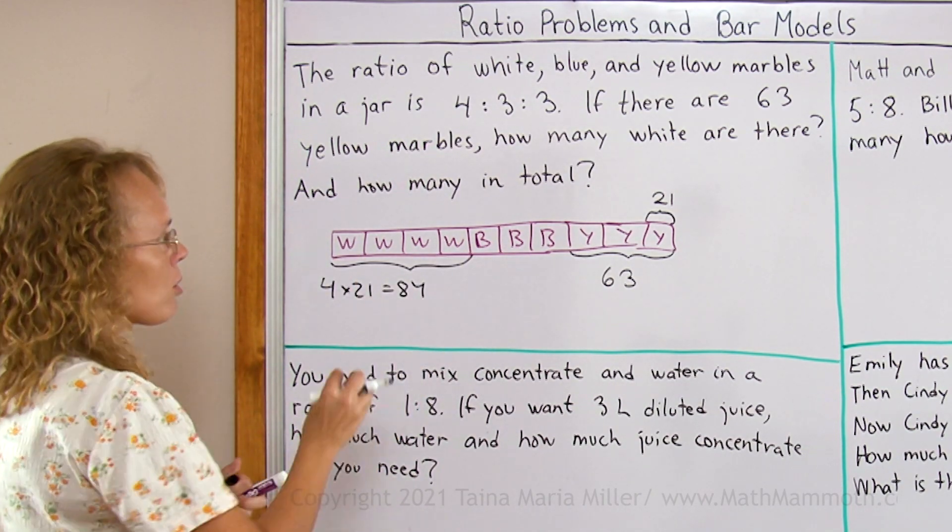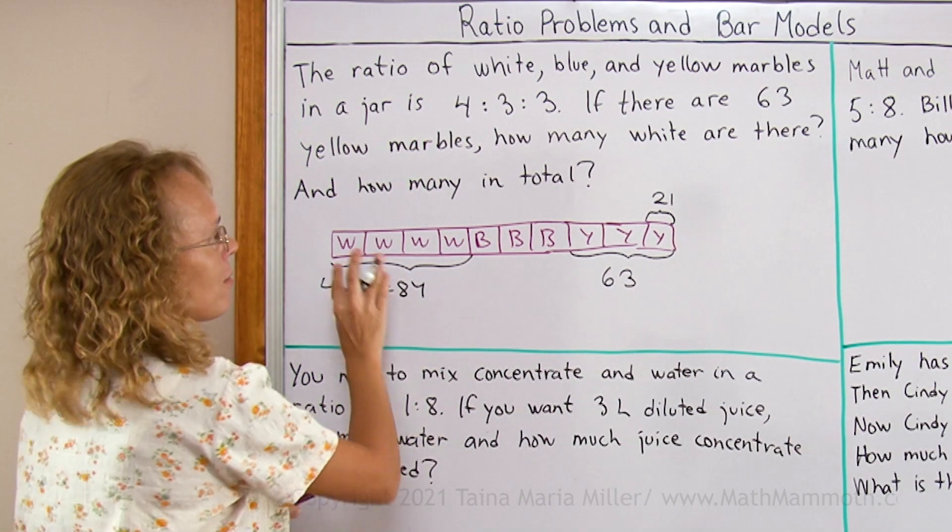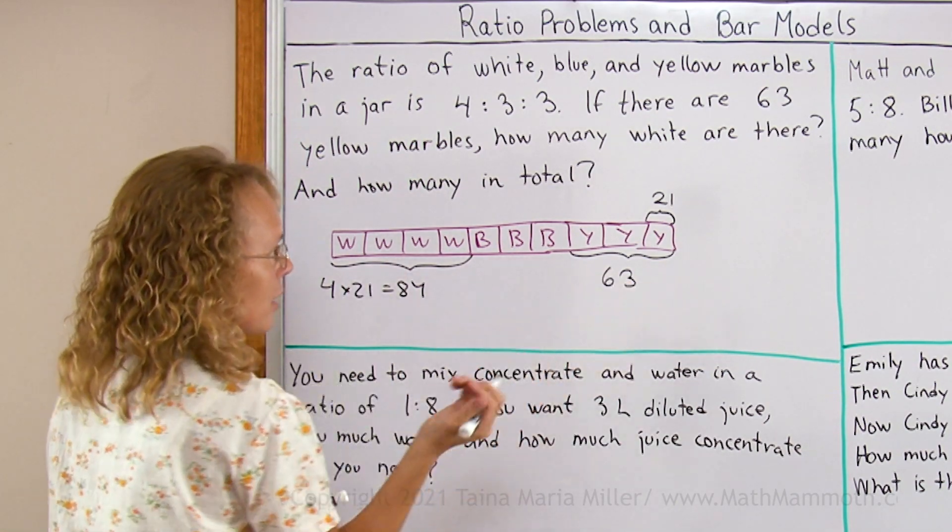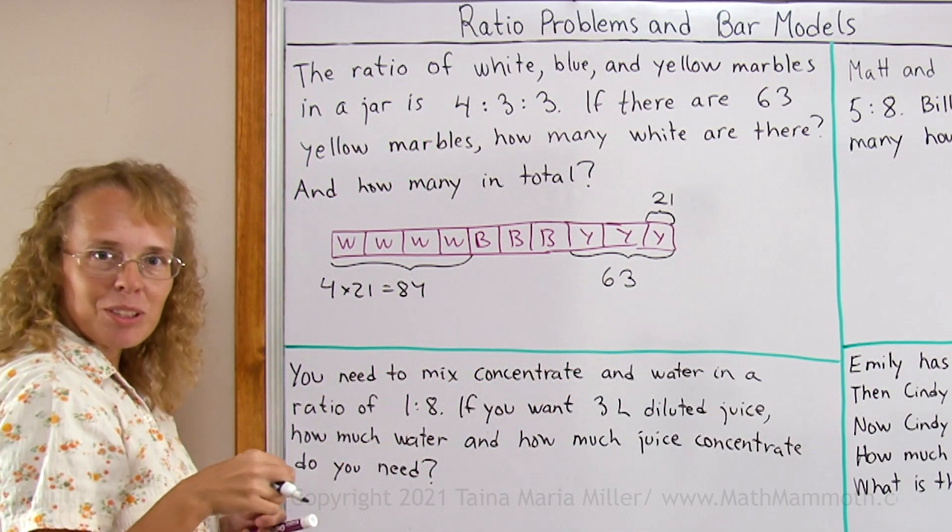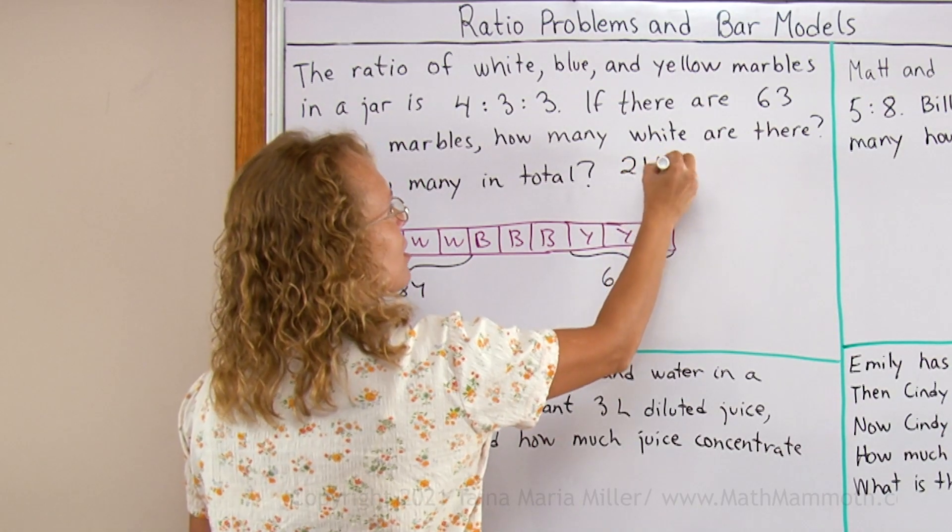Which is 84 over here. And how many in total? I'll count how many parts I have. 4 plus 3 plus 3. 10 parts. So 10 times 21. 210 in total.